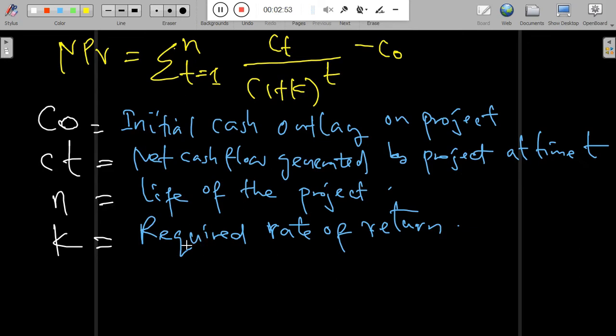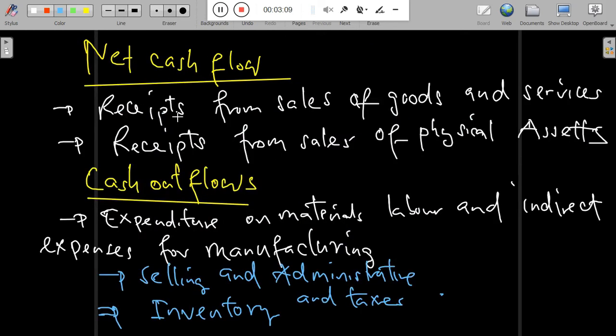You may ask yourself, under net cash flow generated by the project, what are the net cash flows we are speaking about? The cash flow can be the outflow and the inflow. Under net cash flows, we tend to examine the receipts from sales of goods and services and the receipts from sales of physical assets.